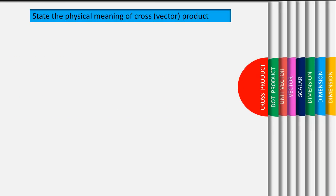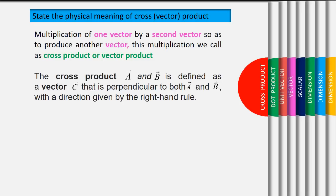State the physical meaning of cross product. Multiplication of one vector by a second vector so as to produce another vector, this multiplication we call as cross product or vector product.